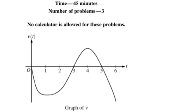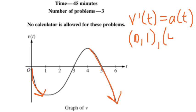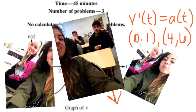For Part D, the acceleration is negative wherever the velocity is decreasing, since the derivative of velocity gives acceleration. Identifying where the velocity graph is decreasing: from zero to one seconds and from four to six seconds — those are the intervals where the acceleration is negative. That concludes the solutions to the 2008 FRQ number four. I hope this helped — I'll see you in class.